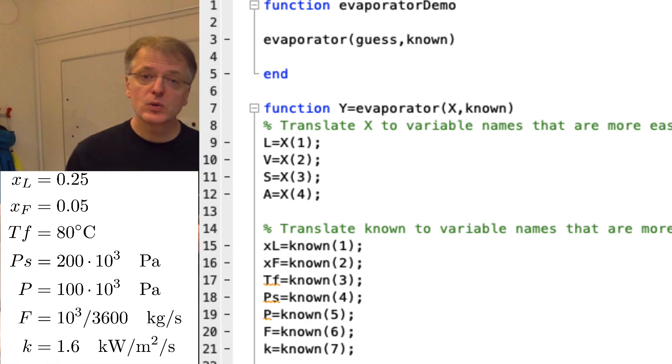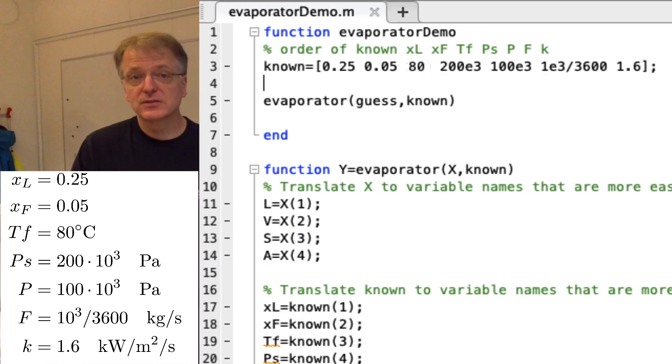In the main function that calls the function evaporator, we need to tell what the values of our known parameters are. The order in the vector must be the same as we have written in the function evaporator and we just fill in the values here.